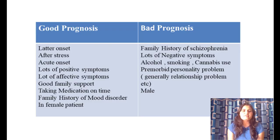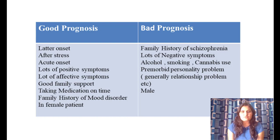Prognostic factors: good prognosis is associated with later onset age, taking medication on time, family history of mood disorder, female sex, and good premorbid functioning. Bad prognosis is associated with family history of schizophrenia, many negative symptoms, substance use (alcohol, smoking, cannabis), and premorbid personality problems or relationship difficulties.